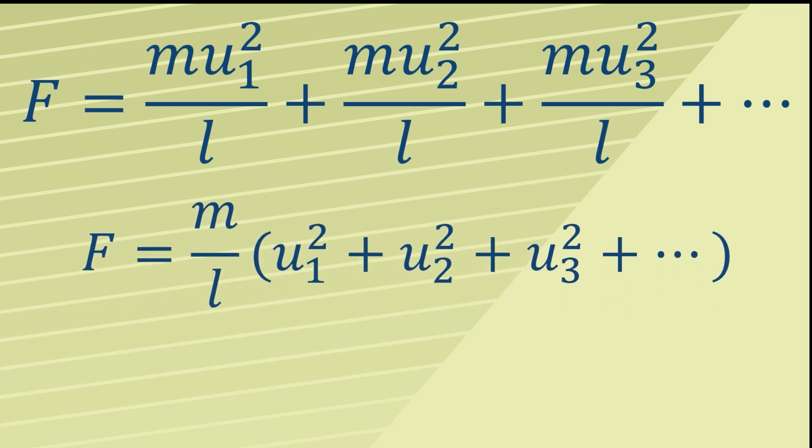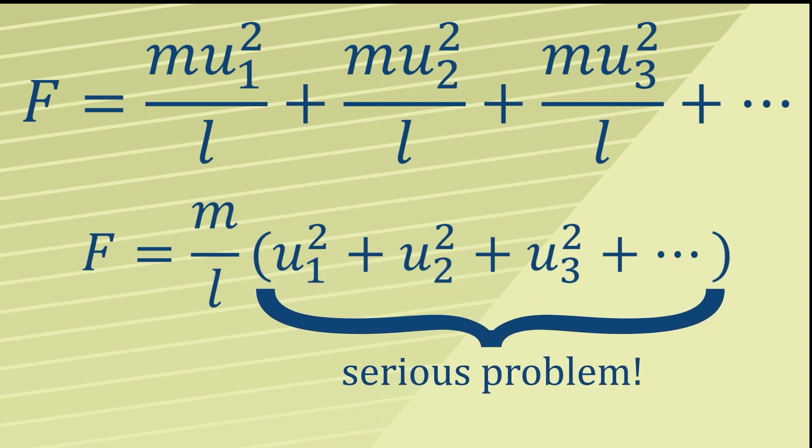If we factorize this expression, we find ourselves with F equals m over L, open brackets, and then all the different speeds squared and added up. Now that's going to keep you busy.